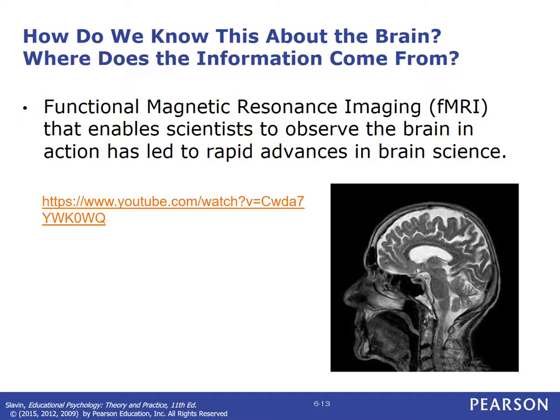How do we know all about this from the brain? There's a special kind of technology — you might have heard of magnetic resonance imaging, or MRIs. An MRI is a static sort of X-ray of the brain showing blood vessels, pathways, and soft tissue. But a functional magnetic resonance imaging, or fMRI, enables scientists to observe the brain in action — they can take pictures or movies of things happening inside your brain and have pathways light up, learning a lot about where things in the brain occur.